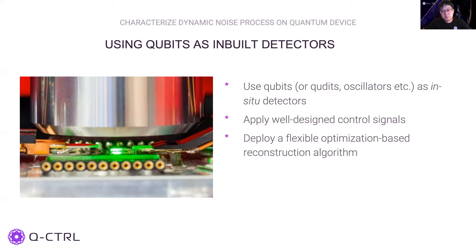Characterizing a noise spectrum can be practically difficult with quantum devices because standard characterization techniques typically only work at room temperatures. When a device is brought to cryogenic operating temperatures, the prior characterization might become inaccurate. Here we present a novel approach where we characterize the noise using the quantum system itself — for example, the qubit — as in-situ detectors.